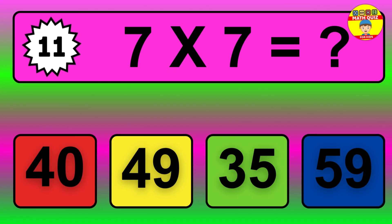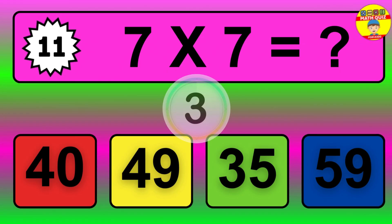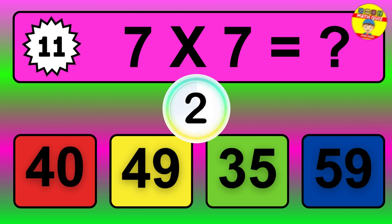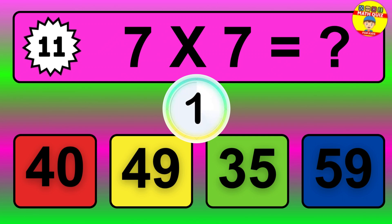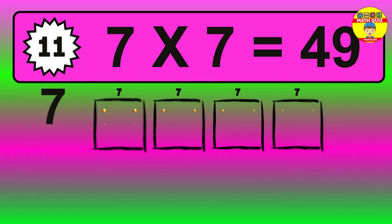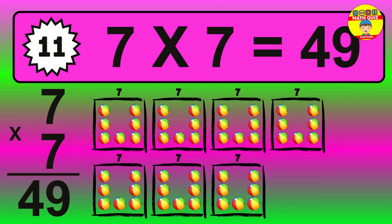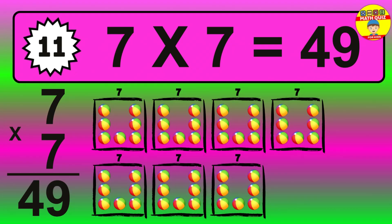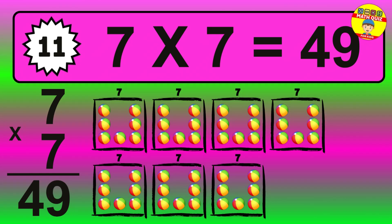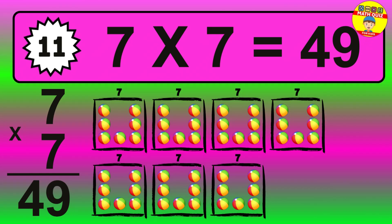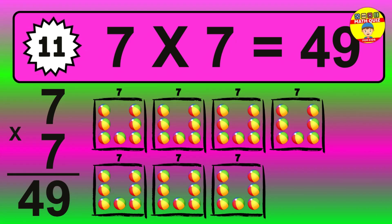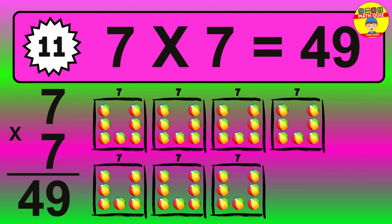Question 11. 7 times 7 equals what? The answer is 7 times 7 is 49. To calculate, we have 7 groups with 7 balls each one. So, how many balls do we have? 49 balls.